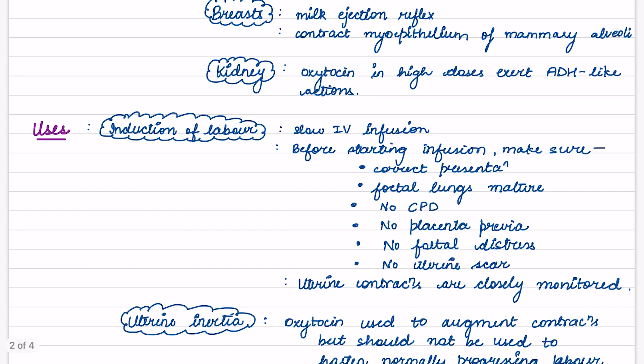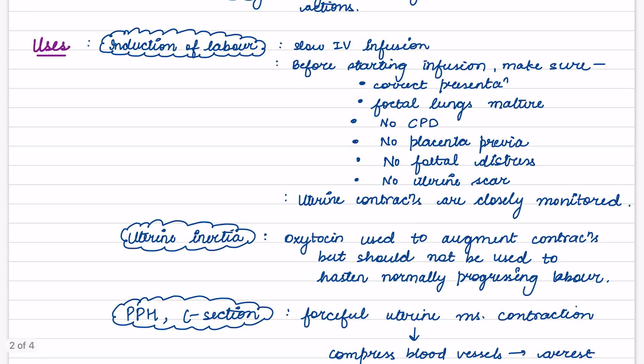Now what are the uses of oxytocin? Oxytocin is used for the induction of labor. Slow IV infusion is given. Before starting infusion, we have to make sure that there is correct presentation, fetal lungs have matured, there is no CPD i.e. cephalopelvic disproportion, no placenta previa, no fetal distress, and no uterine scar. Uterine contractions are closely monitored in this case.